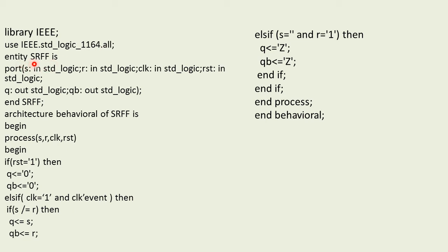We will name the entity SR flip-flop. In the port, we have the first input S and second input R. We place these as S input standard logic and R input standard logic. Along with that we have a clock pulse and a reset input. We have two output terms, Q and QB. Q is normal and QB stands for bar, that is complementary output.